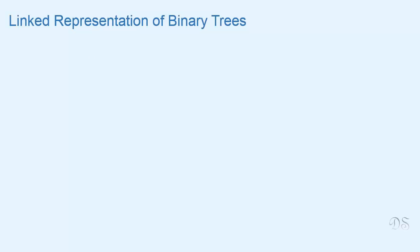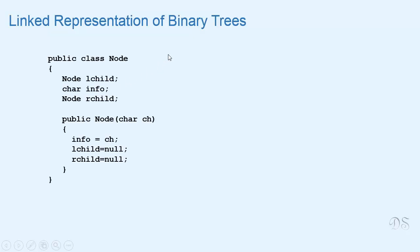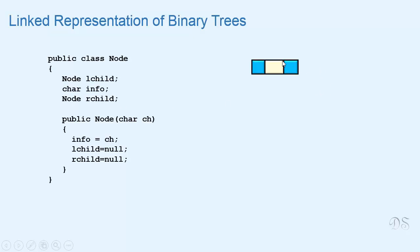In this video we will see the linked representation of binary trees. This is the class node that we will use to represent a node of a binary tree. The left child reference refers to the left child of the node, the right child reference refers to the right child of the node, and the info part contains the actual data that is to be stored.